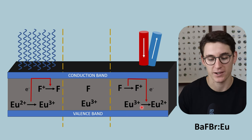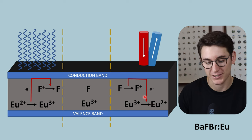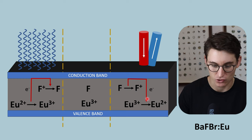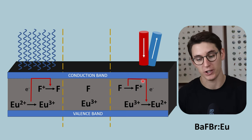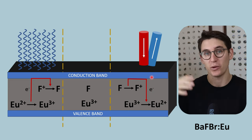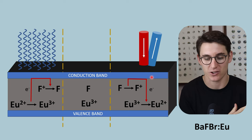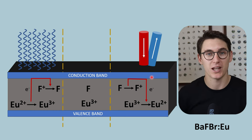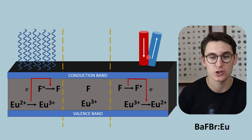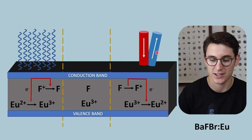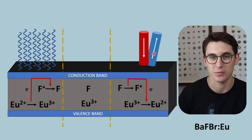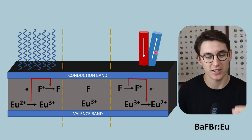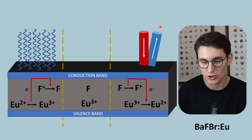That electron can then drop down into our valence band, reducing europium 3+ back to europium 2+. The electron drops from a higher energy state to a lower energy state, so electromagnetic radiation is released — and that electromagnetic radiation happens to be in the blue visible light spectrum, in the 400 to 450 nanometer range. So we shine red light onto our cassette and the release of energy occurs in the blue light spectrum. We have turned x-ray energy into light energy — a signal that is light energy.